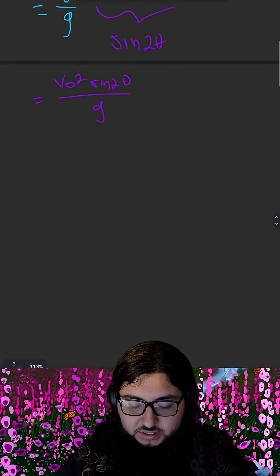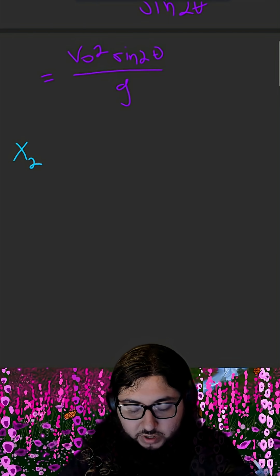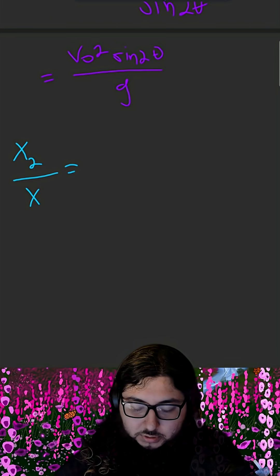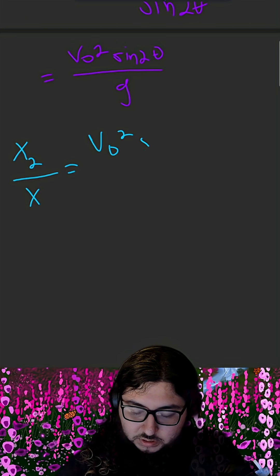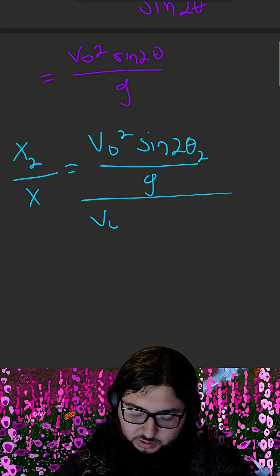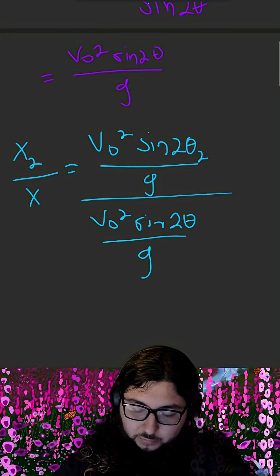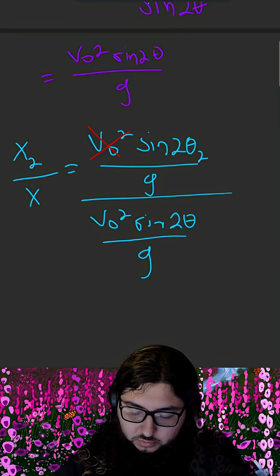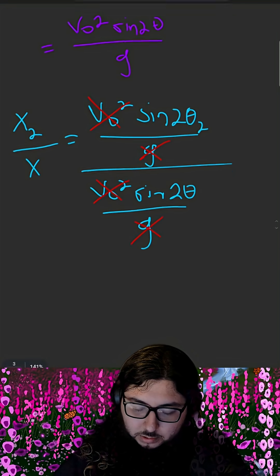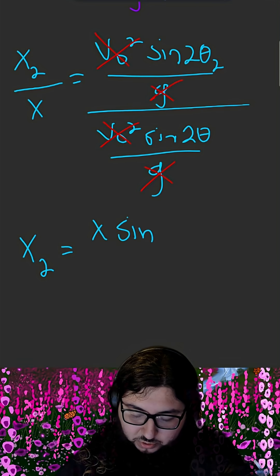Now we have an expression for distance. And if we divide x2, the distance the ball travels at a 45 degree angle, by x, this should be equal to v naught squared sine of 2 theta sub 2 over g over v naught squared sine of 2 theta over g. As you can see, some of our terms cancel out, v naught squared g.